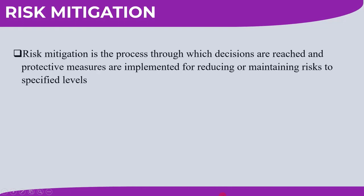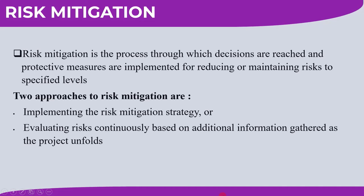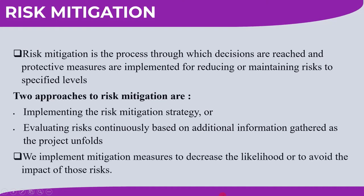Finally, we covered Risk Mitigation — the process through which decisions are reached and protective measures are implemented for reducing or maintaining risks to specified levels. Two approaches to risk mitigation are: implementing the risk mitigation strategy, or evaluating risks continuously based on additional information gathered as the project unfolds. We implement mitigation measures to decrease the likelihood or to avoid the impact of those risks.